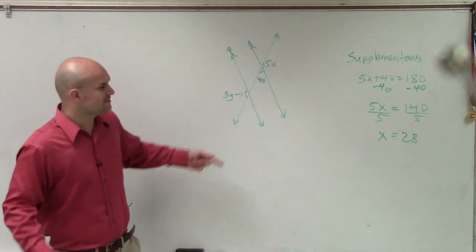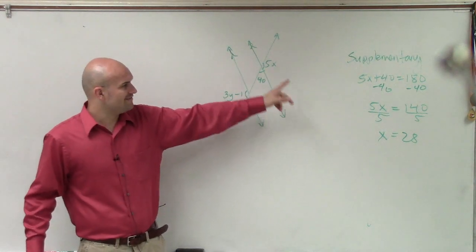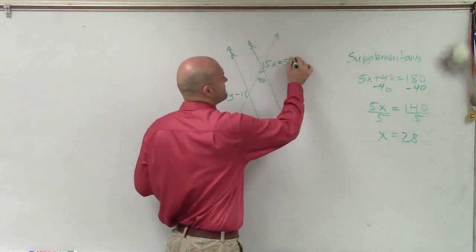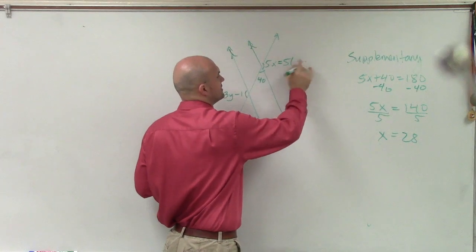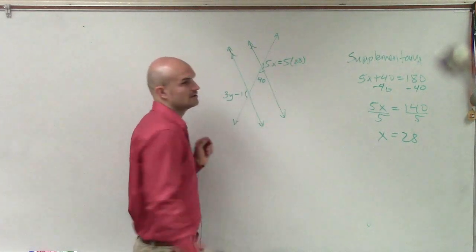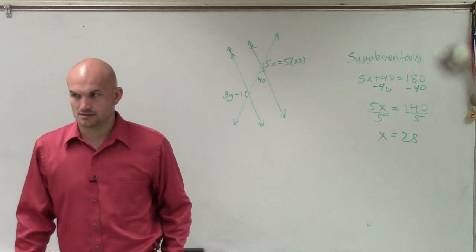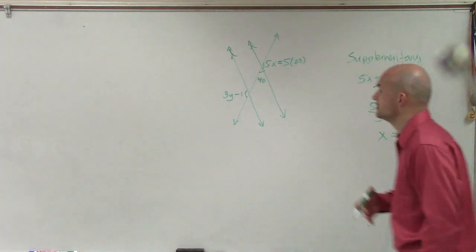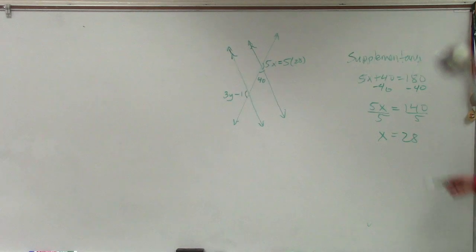So first of all, ladies and gentlemen, if I have x is 28, can I then now say that 5x is 5 times 28? Yes. Would that make sense? Yes. So therefore, this answer, 5 times 28, we know is 140.